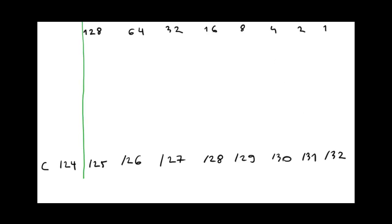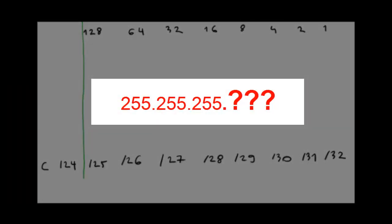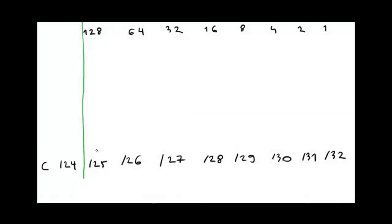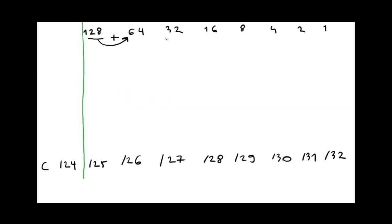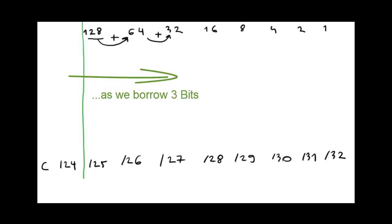Now we're getting to the point: what is the subnet mask value in dotted decimal notation? For /25, it's 128. For /26, it's not 64 — it's 128 plus 64. For /27, it's 128 plus 64 plus 32. To make things easier, I'm going to write down another row of values — these will be the cumulative sums of the bit values from the octet.